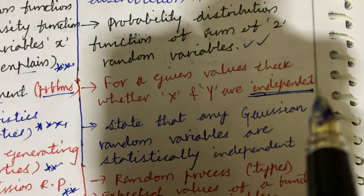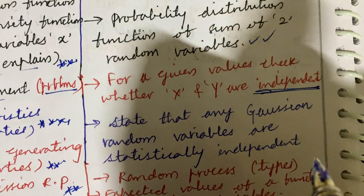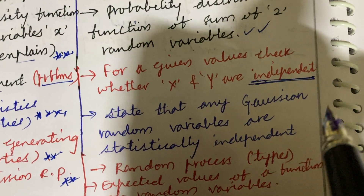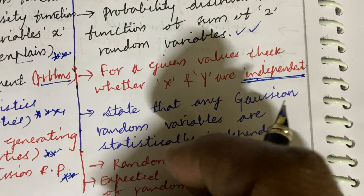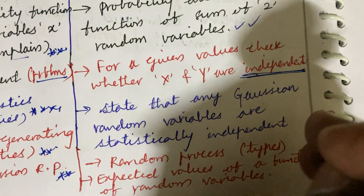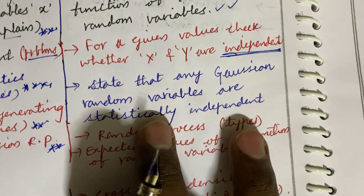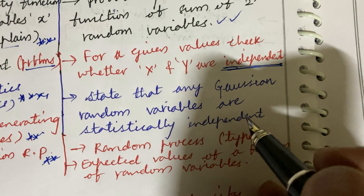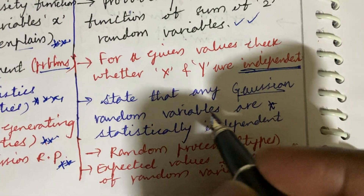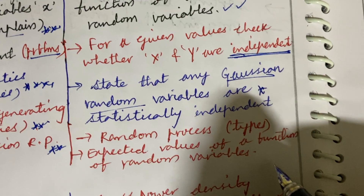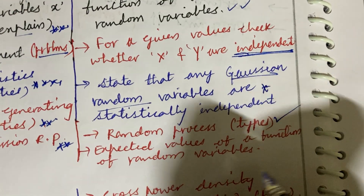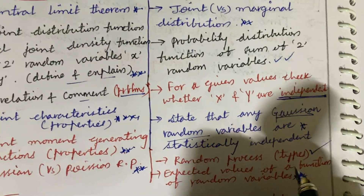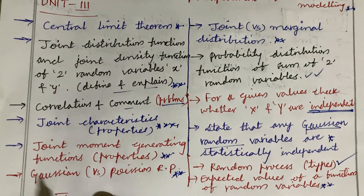You will be getting two short questions in the form of long questions — they may give question four and five, or questions six, seven, and eight from Unit 3. You will be getting four long questions and two short questions covering each and every part. Dear students, do not skip any part. State that any Gaussian random variables are statistically independent — this is a top question. Random process and its types is a short question. Expected values of a function of a random variable may also be a short question. These are very important sure-shot questions under Unit 3.